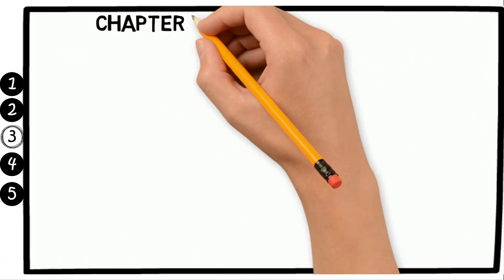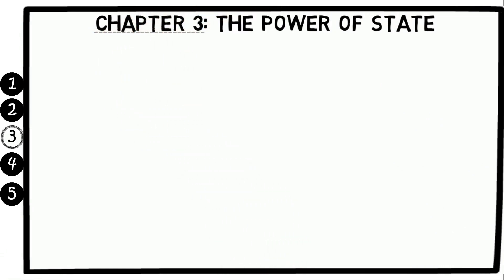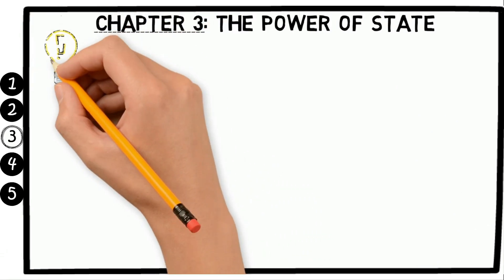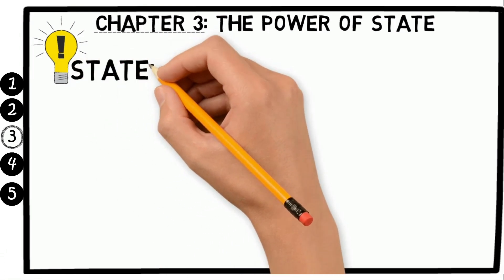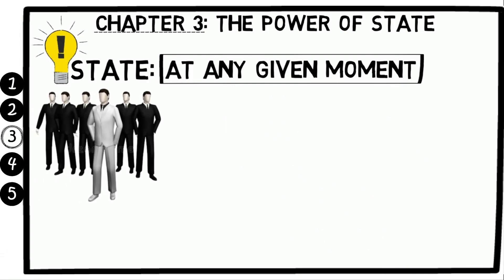Chapter 3: The Power of State. In Chapter 3 of Unlimited Power, Tony Robbins explains the concept of state. State refers to the emotional state that we're in at any given moment, and it plays a big role in how we experience life.